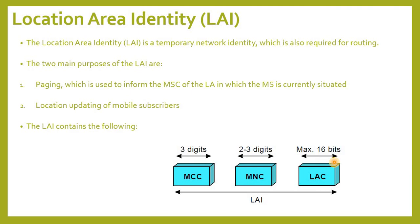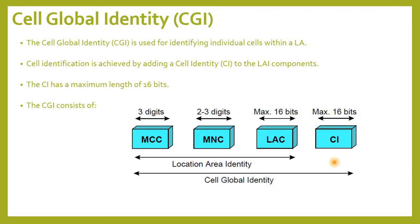Cell Global Identity — CGI. The CGI is used for identifying individual cells within a location area (LA). Cell identification is achieved by adding a Cell Identity (CI) to the Location Area Code (LAC) components. The CI has a maximum length of 16 bits. The CGI consists of: MCC — Mobile Country Code, MNC — Mobile Network Code, LAC — Location Area Code, and CI — Cell Identity.